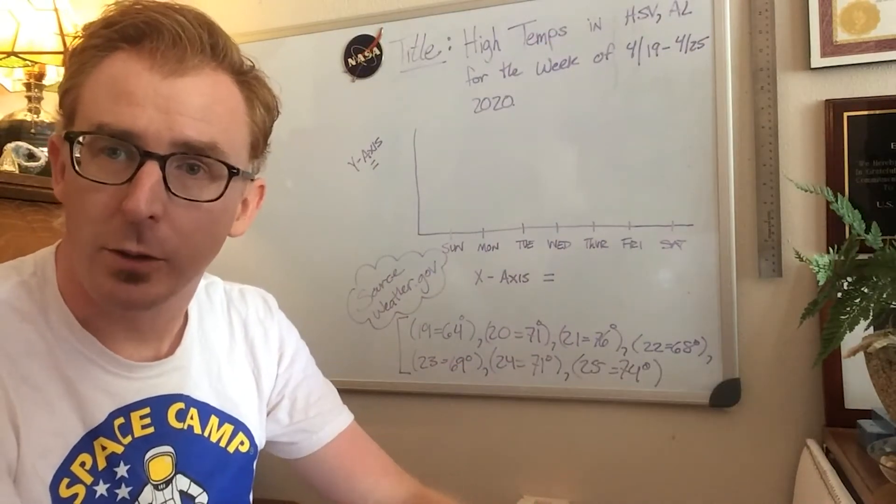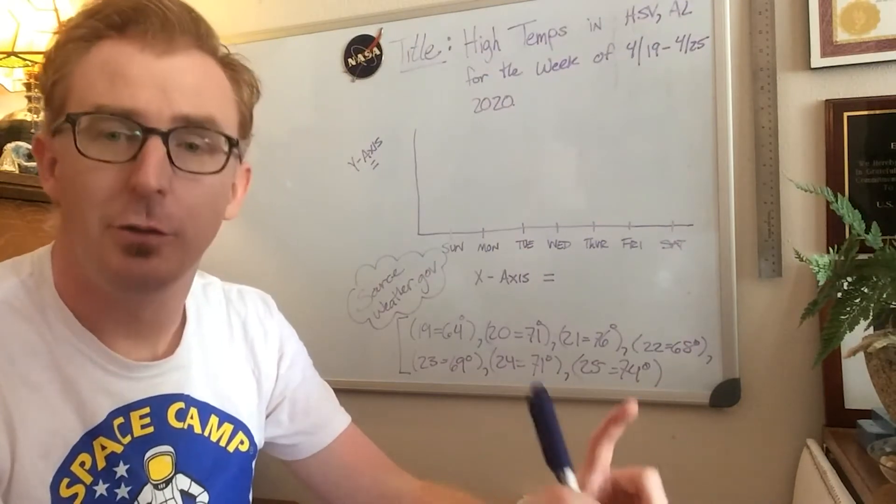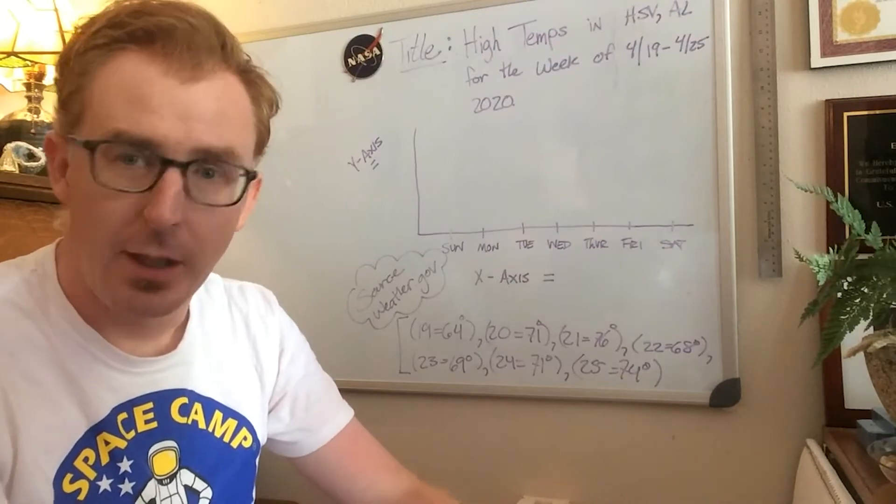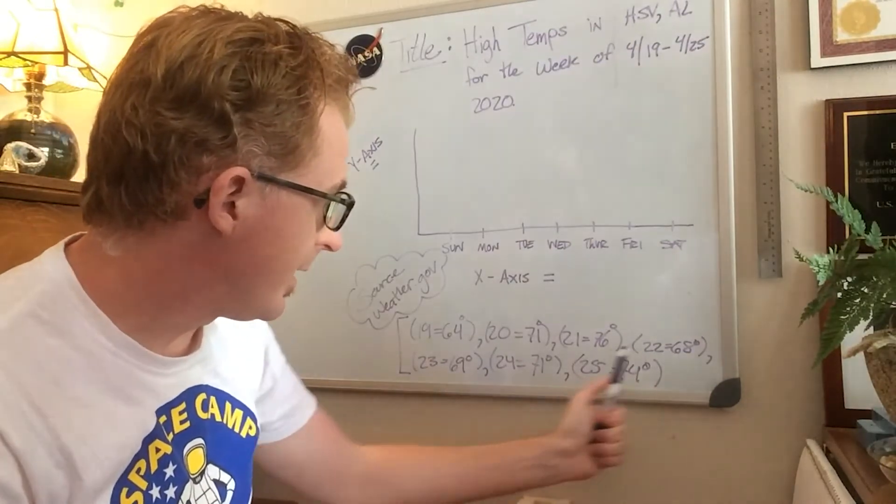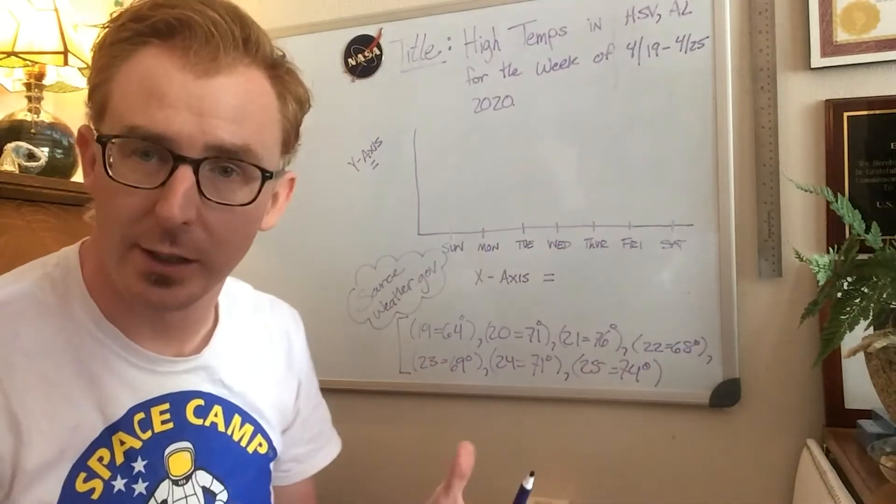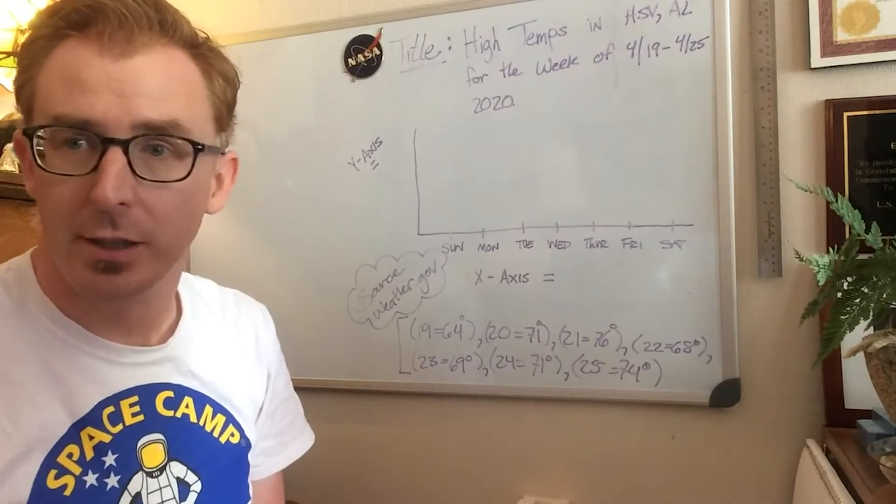So I went to weather.gov and looked up that range of high temperatures for that week worth of days. And I plotted those in a table in the bottom. So I have my information readily available for me to use with the date and the high temperature amount.